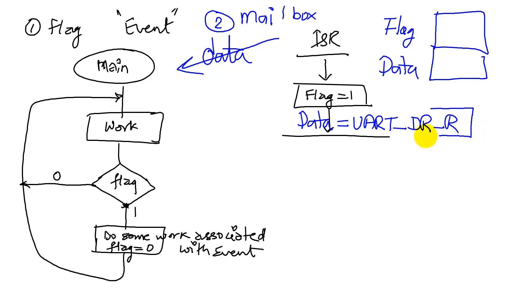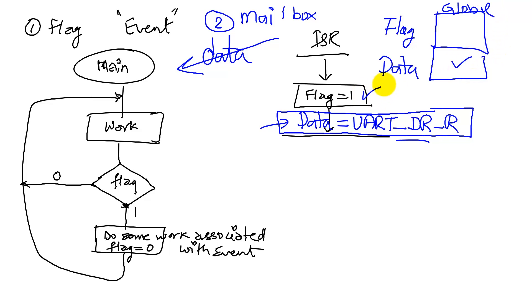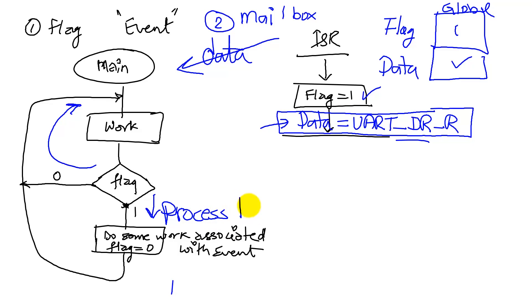The flag is raised to indicate to the main program that there is fresh data. In the interrupt service routine, we read the data from the input, write it to a global variable, and then set the flag to 1. The main program checks the flag — if it is 0, there is no data and it does something else; if it is 1, there is data, and we process or consume that data.